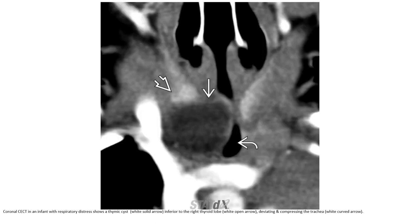Contrast-enhanced CT in an infant with respiratory distress shows a cystic mass inferior to the right thyroid lobe, elevating and compressing the trachea.